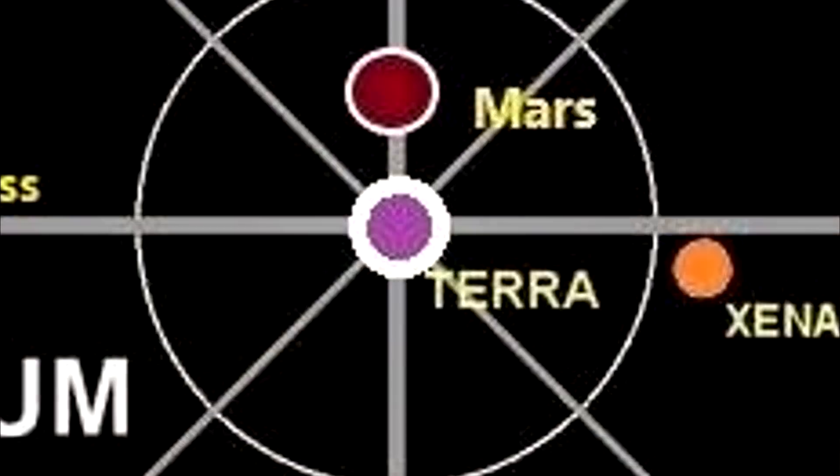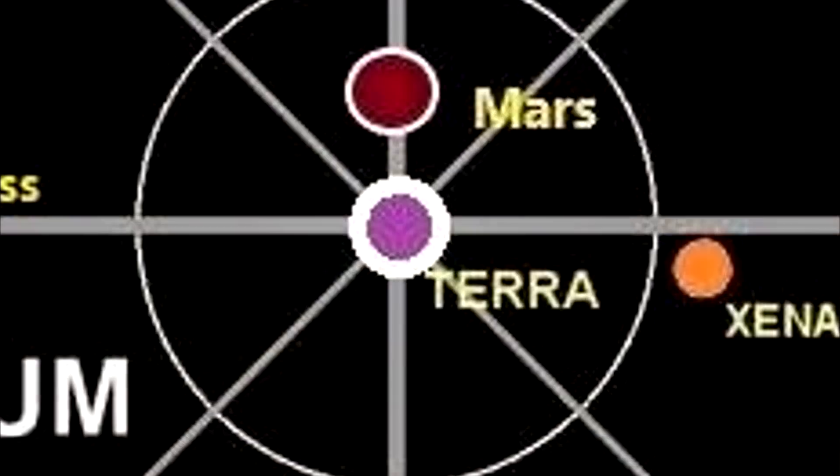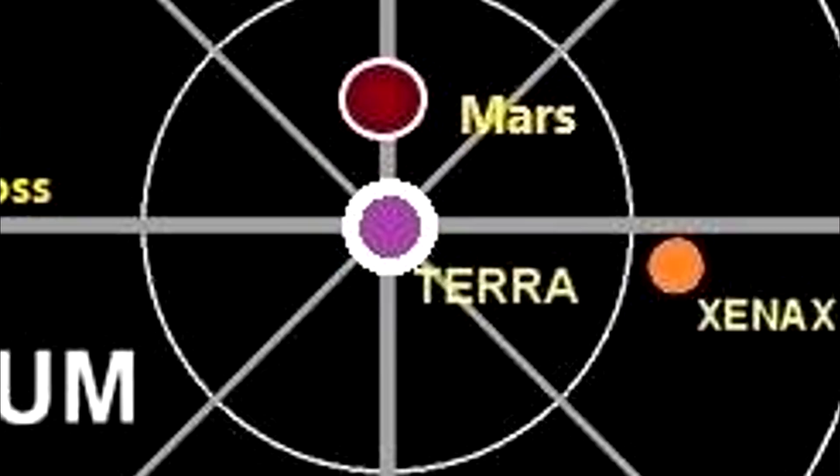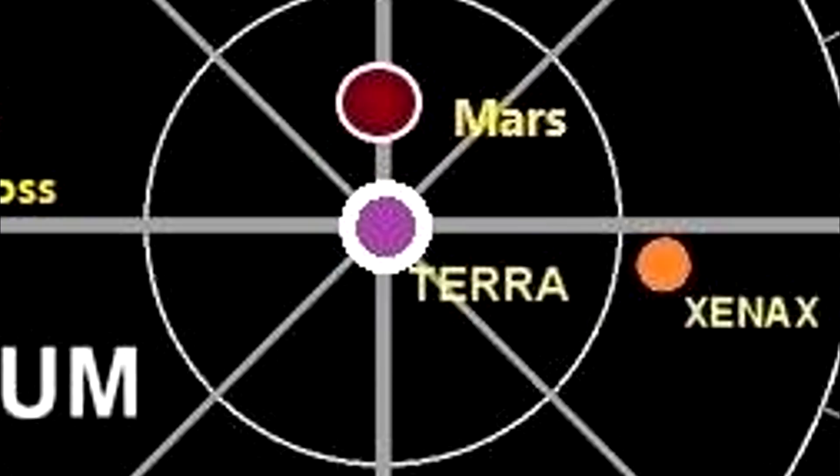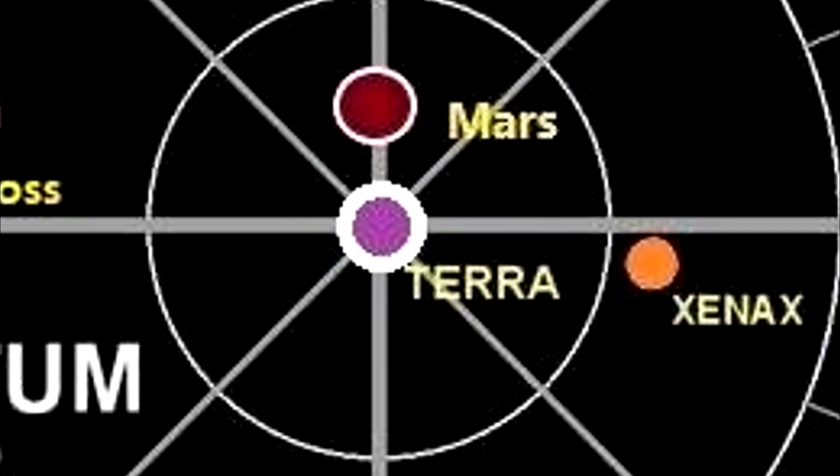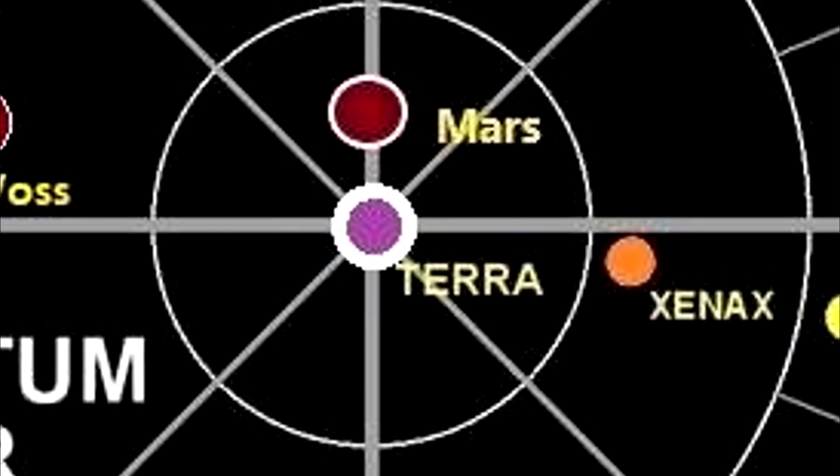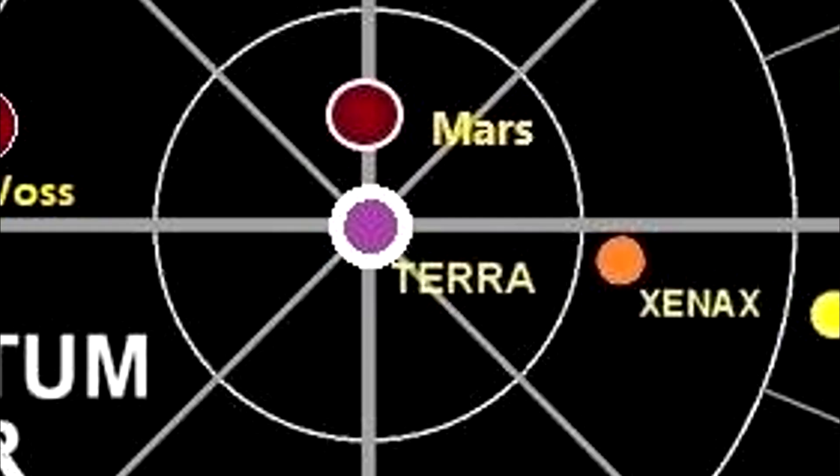The Imperium of Man is vast. It is by far the single largest power within the 41st millennium. It covers quadrillions of miles. It contains within it millions of inhabited planets and billions of uninhabitable asteroids and worlds utilized for mining operations, observation purposes, or even gargantuan space-based dockyards for the Imperial Navy.